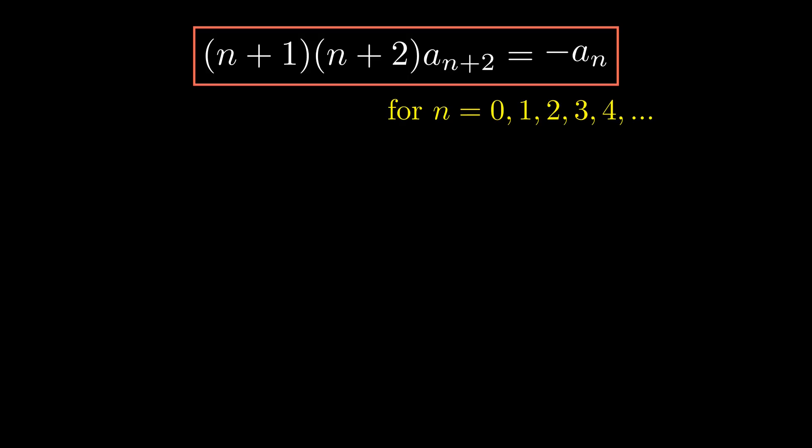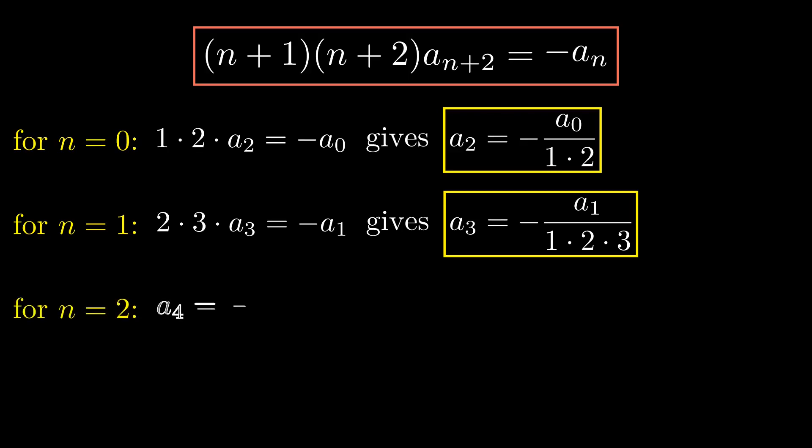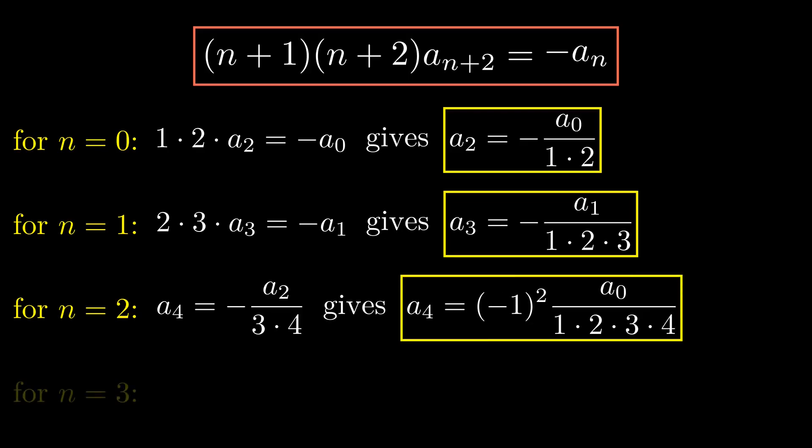To make sense of this relation, let's try out some values of n. Starting with n equal to 0, we get a2 equal to minus a0 divided by 1·2. For n equal to 1, we have a3 equal to negative of a1 divided by 1·2·3. I am writing the denominator in this fashion so that the formation of factorial term is clearly visible. Similarly, for n equal to 2, a4 is equal to minus of a2 divided by 3·4. But a2 can be written in terms of a0 which gives us a4 equal to minus 1 square times a0 divided by 4 factorial. Let's do it one more time for n equal to 3 which gives relation between a5 and a3 and then it can be rewritten in terms of a1.